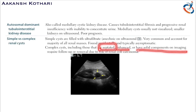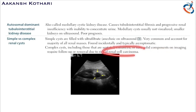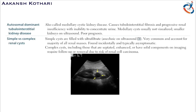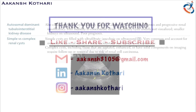Complex cysts are septated, enhanced, or have solid components on imaging — these are high-risk cysts that can lead to renal cell carcinoma. They require follow-ups or removal. Simple cysts contain ultrafiltrate and are anechoic and asymptomatic, whereas complex cysts are septated with solid components and can lead to renal cell carcinoma.